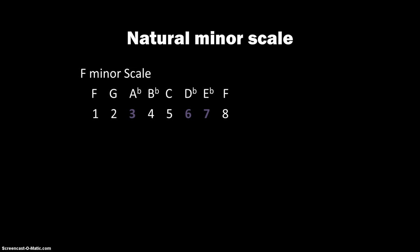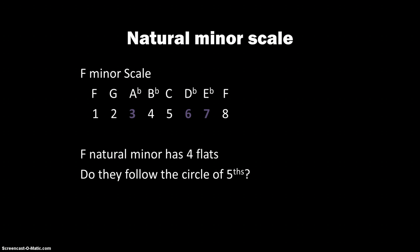That's got me thinking — the F minor scale has four flats. Are they following the circle of fifths? We've got A, B, D, and E. If we scramble those around, we get B, E, A, D. So yes indeed, the four flats do follow the circle of fifths pattern for the order of flats.